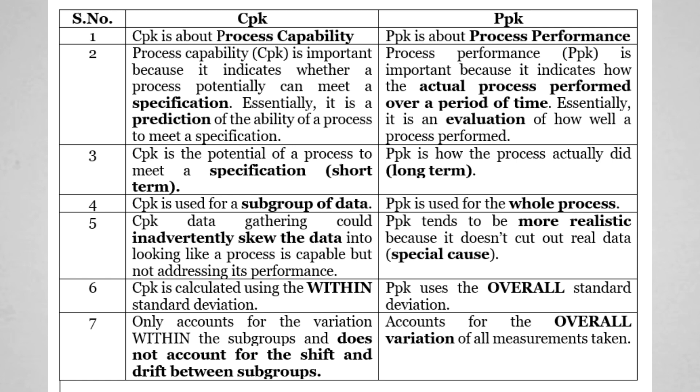When we talk about process capability — that is CPK — it is asking whether the process can potentially meet a specification; it is a prediction of the ability of the process to meet a specification. Whereas when we talk about PPK, it is talking about how the actual process is performing over a period of time. CPK is the potential of a process to meet a specification, while PPK is how the process is actually doing in the long term.